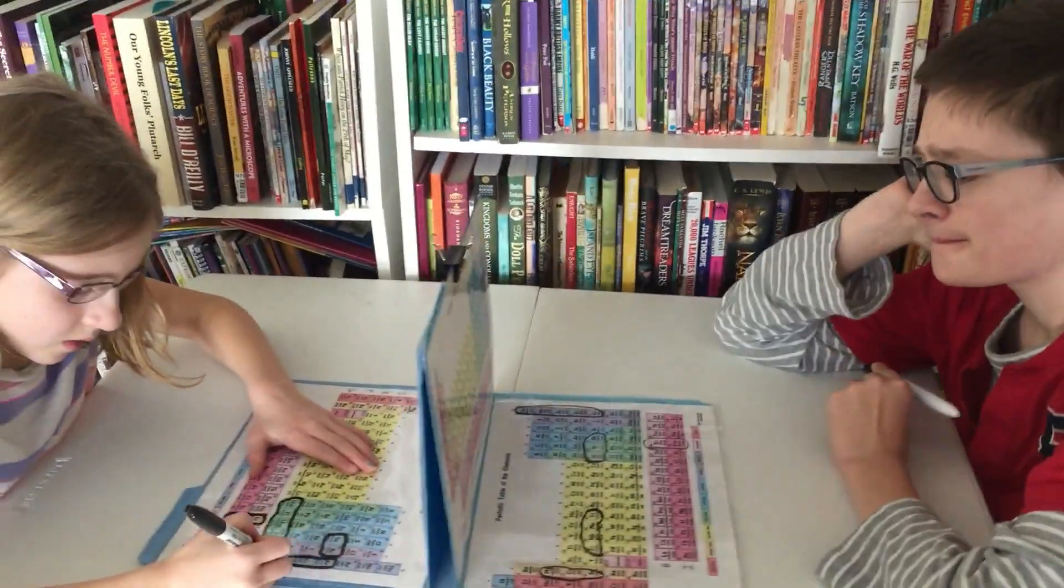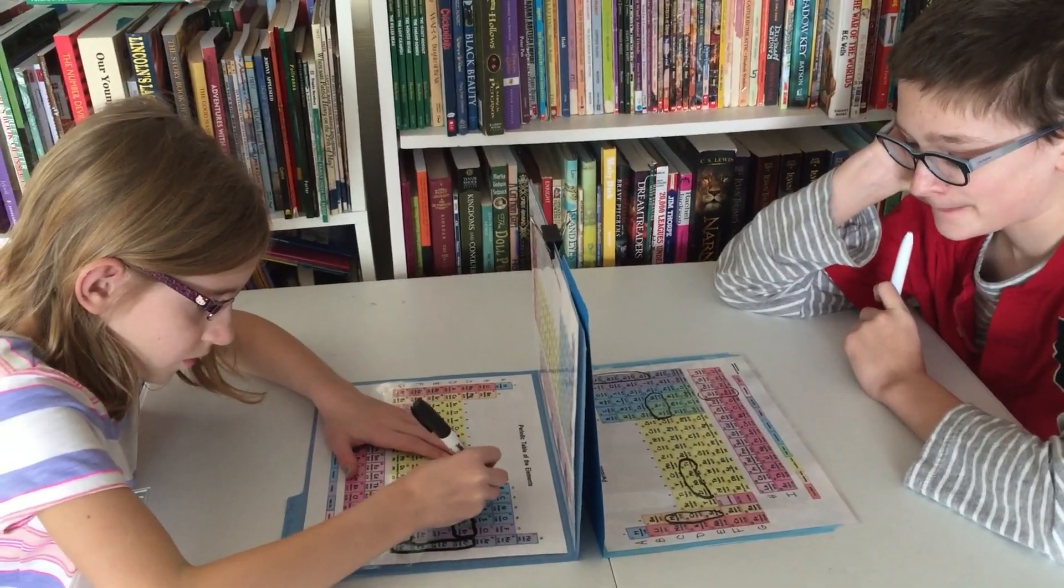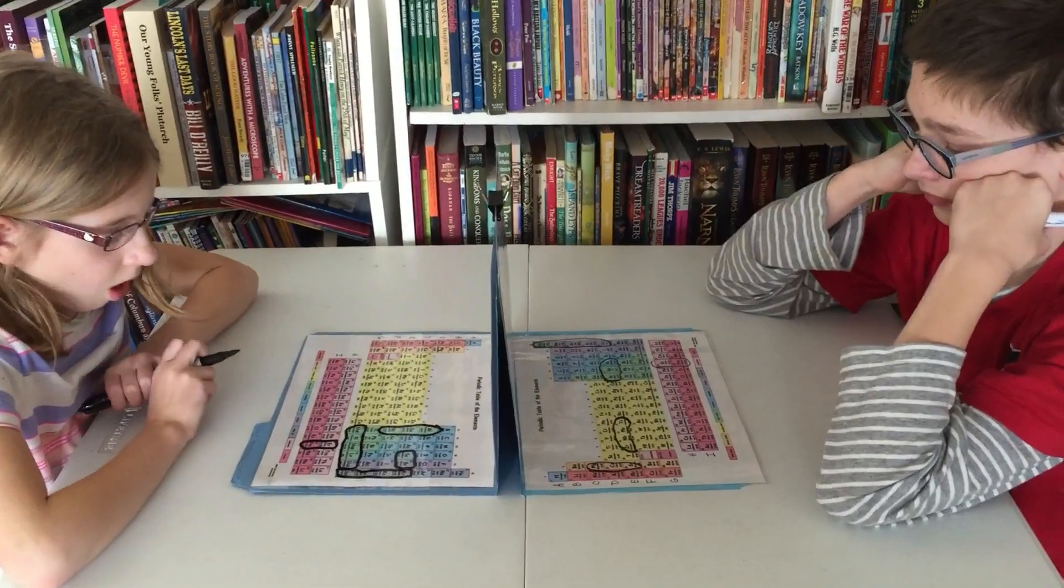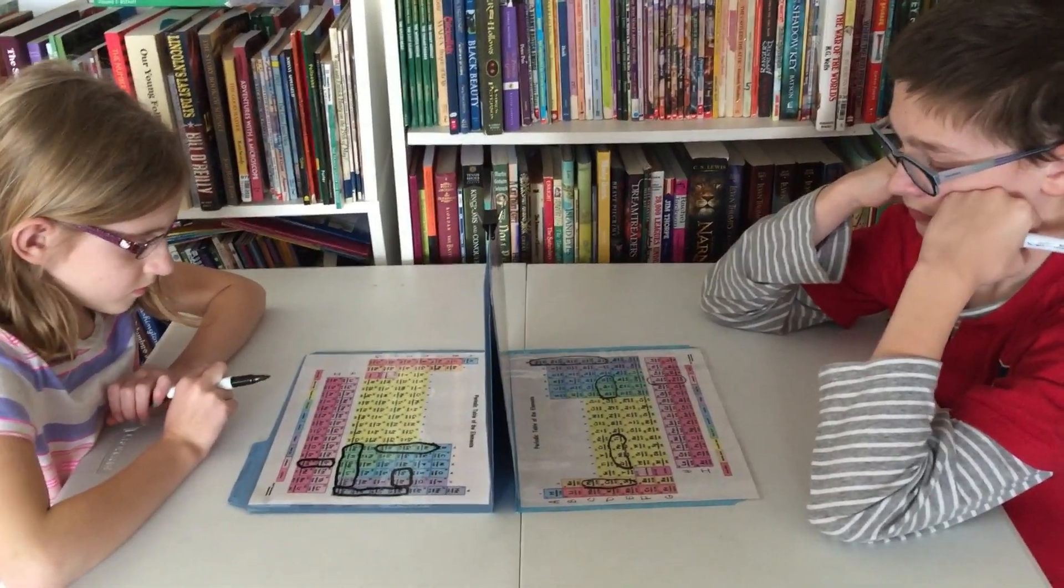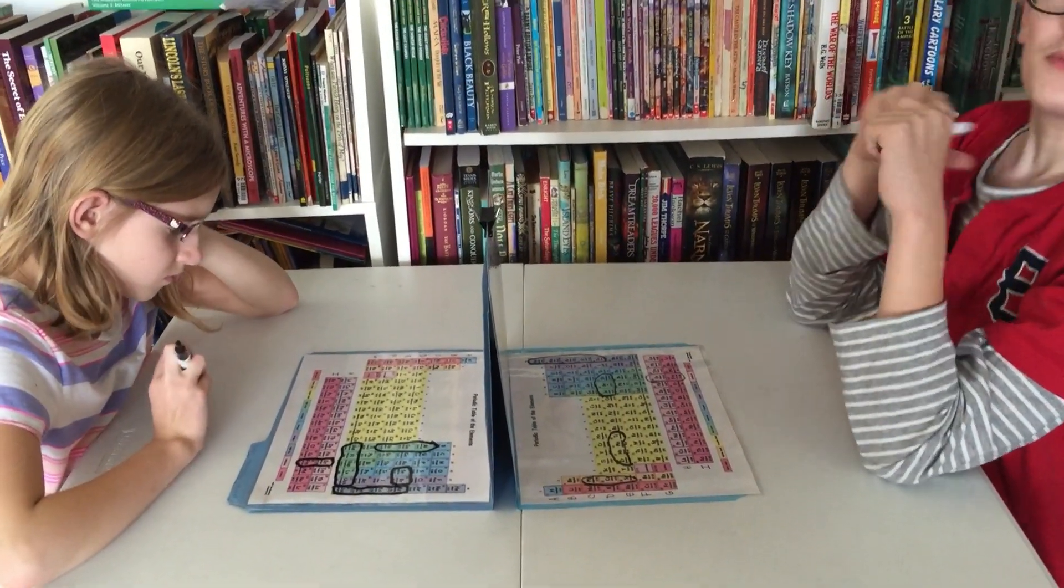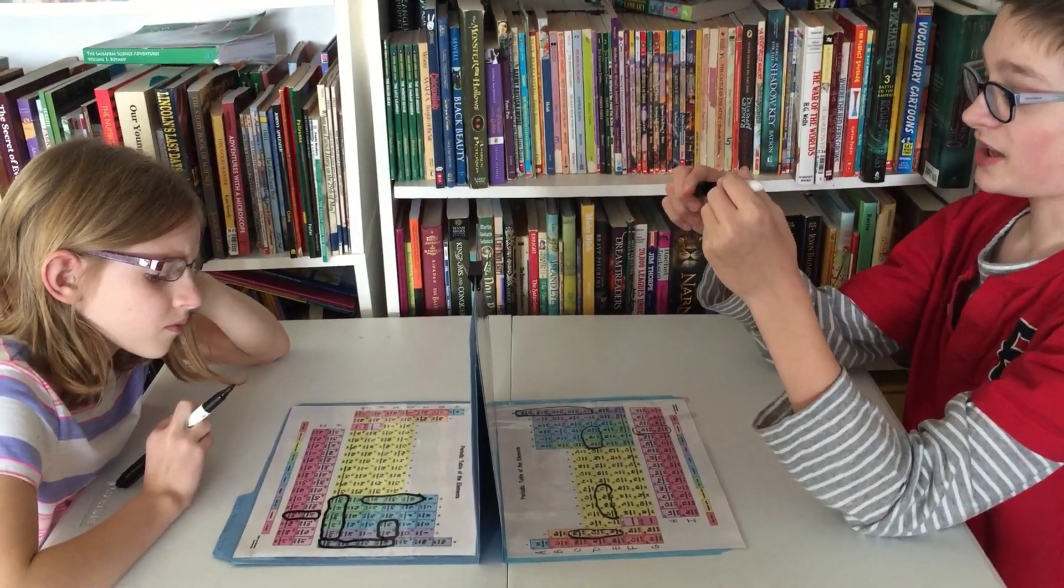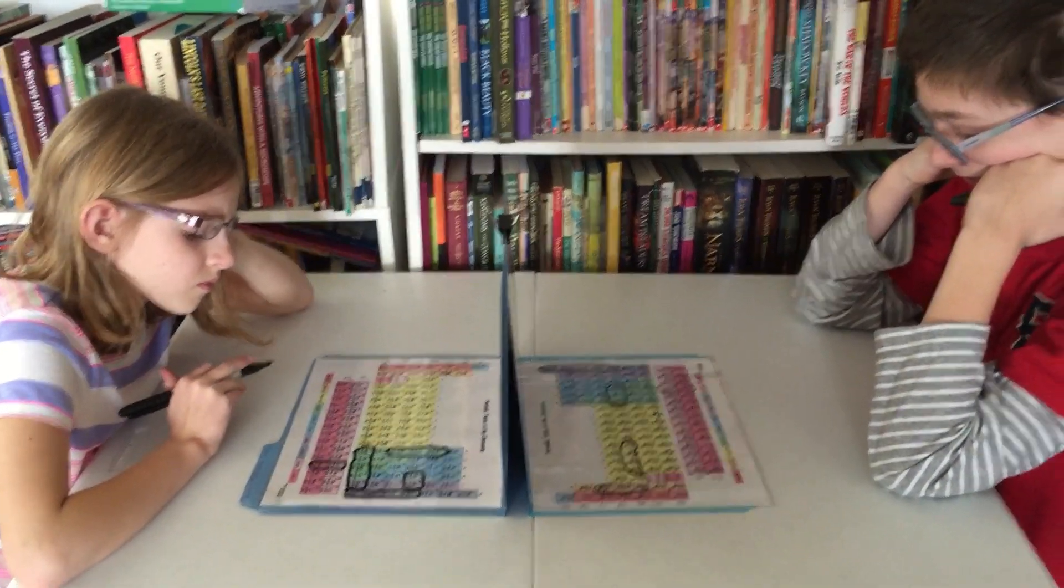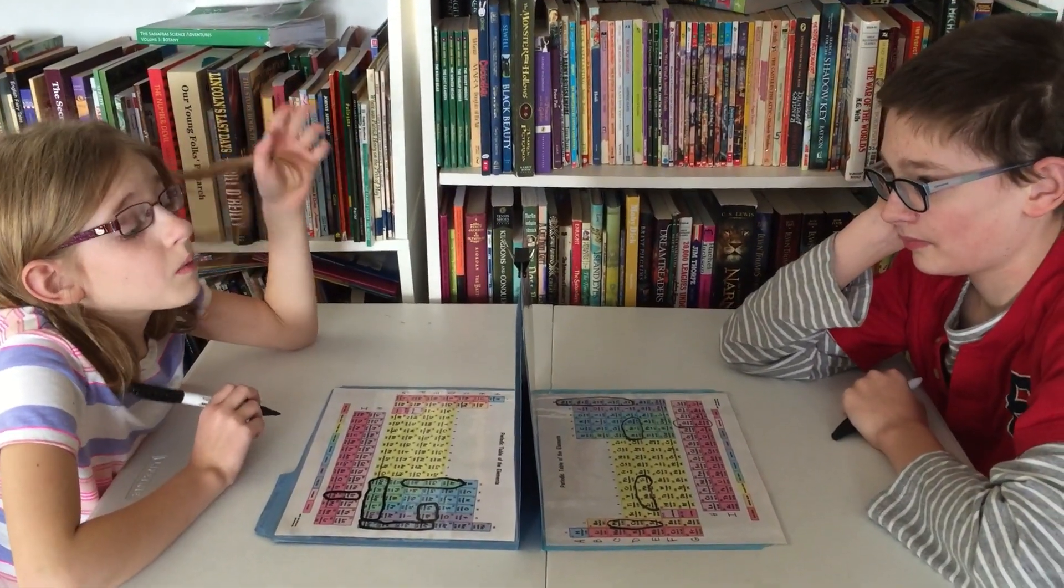Okay, so are you guys ready? Have you circled all of your battleships yet? Let us know when you're ready and then we can start. What they're going to do is they're going to call out elements either by abbreviation or element numbers. When they call one that is a part of their ship, they say it's a hit and color it out. When they sink a ship, it's sunk, and the first one to sink all of the opponent's ships will win.